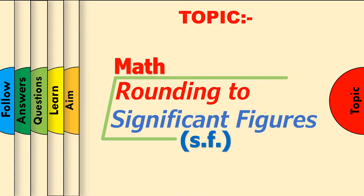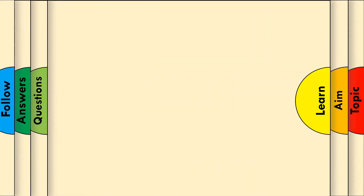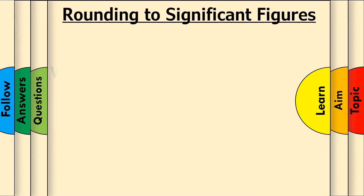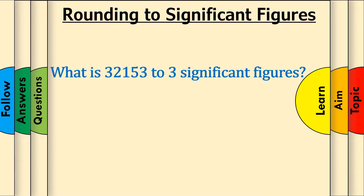Here's an example question. What's 32,153 to 3 significant figures? Before we do anything, just write down the number again, and since it doesn't already have a decimal point, stick one on at the end.